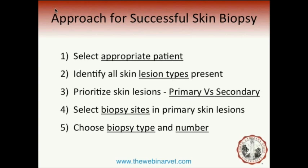An approach I've outlined in five steps: first, select an appropriate patient — not every patient is useful to biopsy. If we do have an appropriate patient, identify all the skin lesion types present, then prioritize them into primary and secondary lesions. We're targeting primary lesions for skin biopsy and avoiding secondary nonspecific ones. Within a primary lesion, there's an appropriate place to biopsy to capture the underlying pathomechanism of the disease.